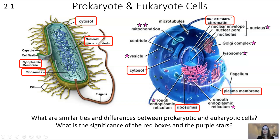There are two main categories of cells I'd like us to look at. Look at these diagrams. What are the similarities and differences you notice between prokaryotic and eukaryotic cells? And what is the significance of the red boxes and the purple stars on this diagram?